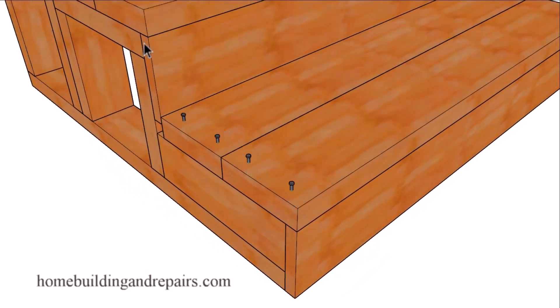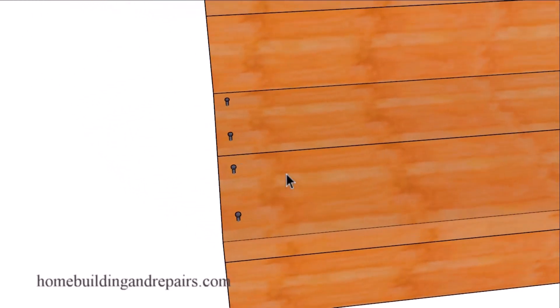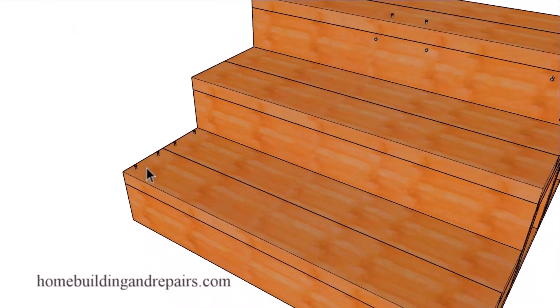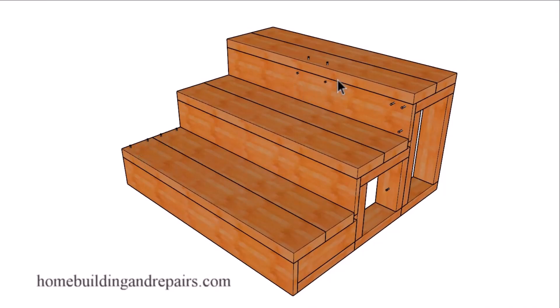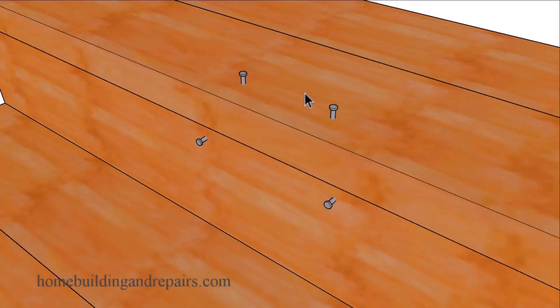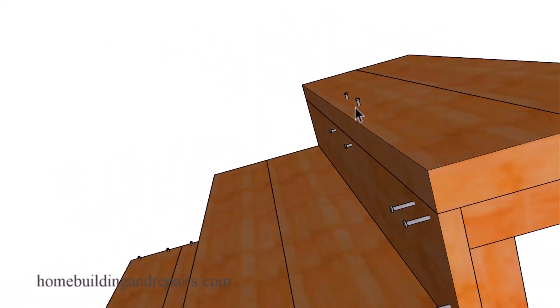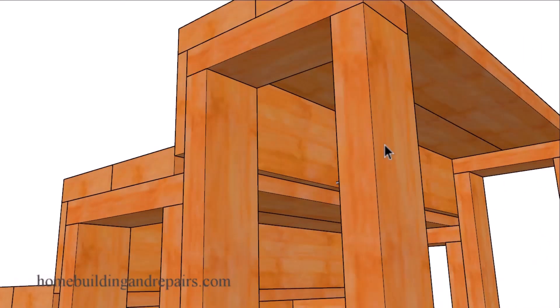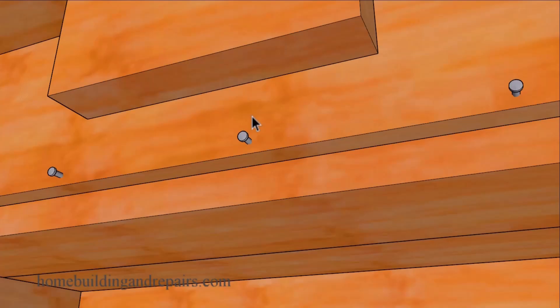And the treads can be attached with 16D nails or screws that are at least three inches long. And you can always put three nails or three screws per board where I only have two. And of course, to strengthen this area up here, I want to attach some type of a scrap piece of lumber, maybe a two by four or a two by six underneath this section here.